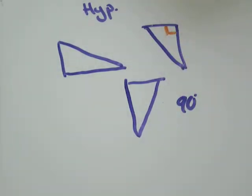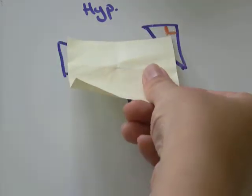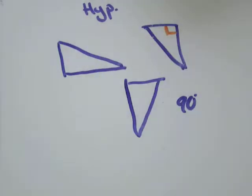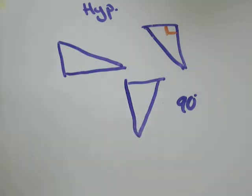And right angle you always just use the symbol of a square. Which kind of makes sense, right? A square is kind of like a corner being able to fit into it. I'll do the same thing for these triangles.